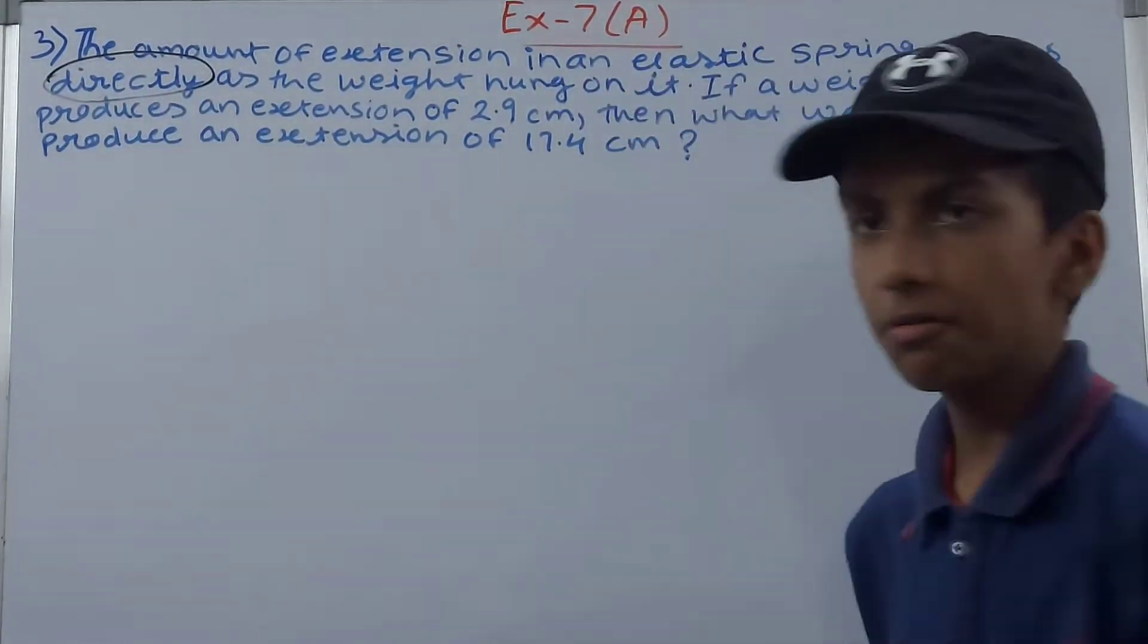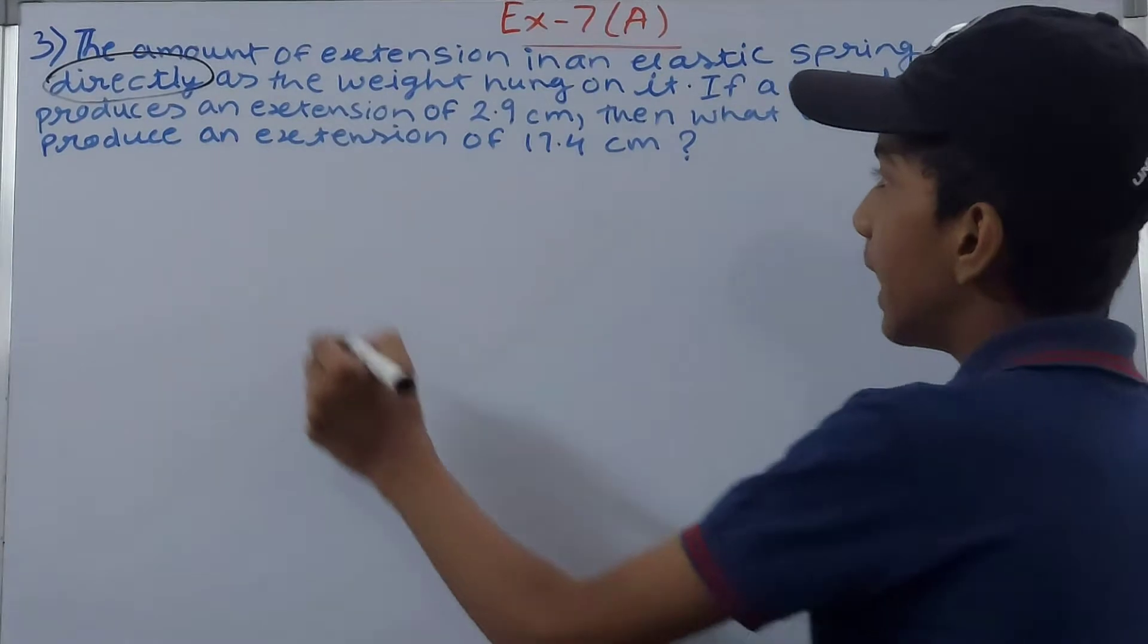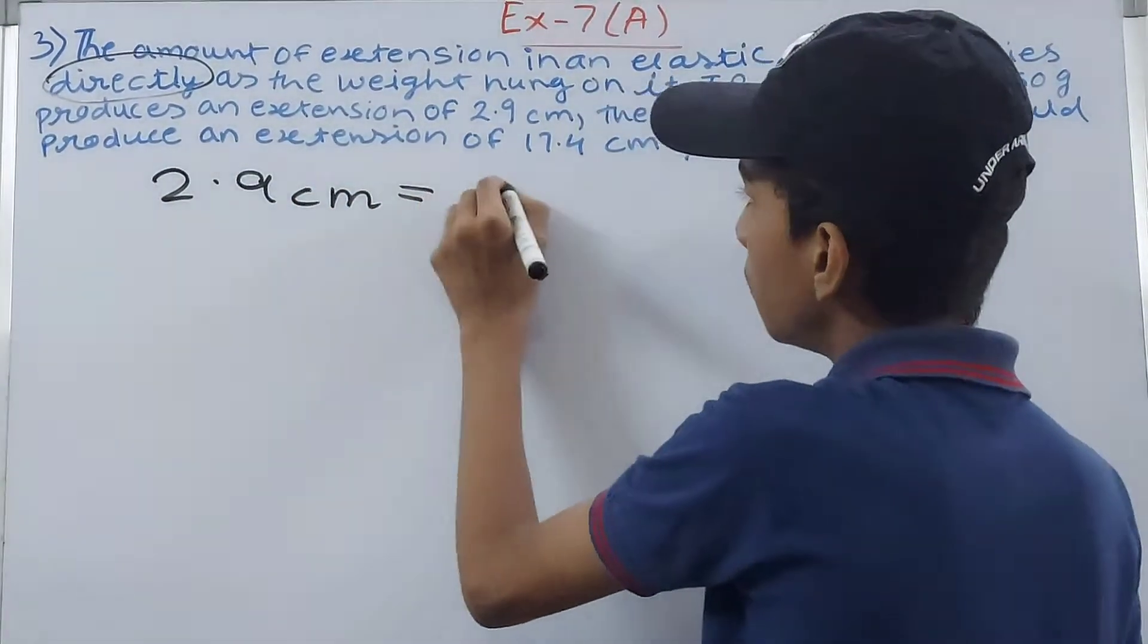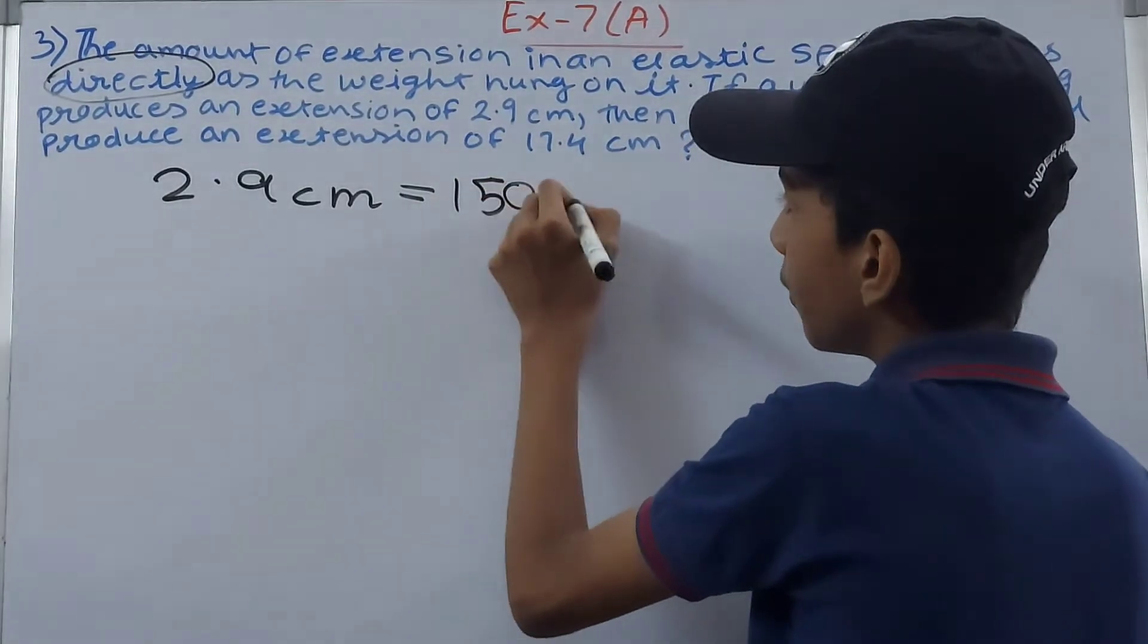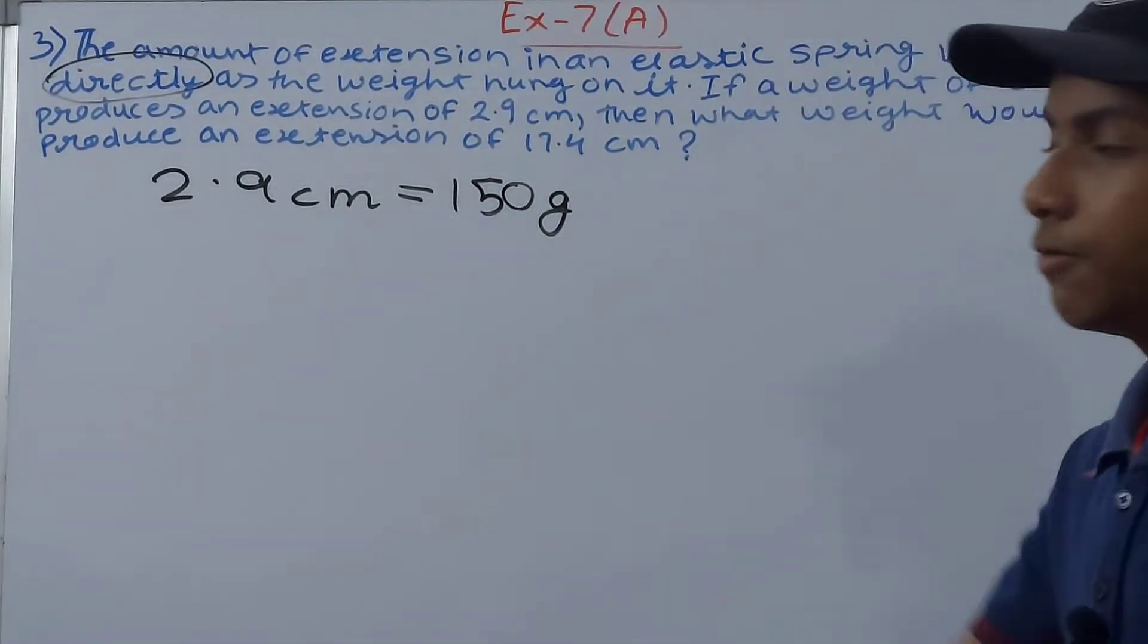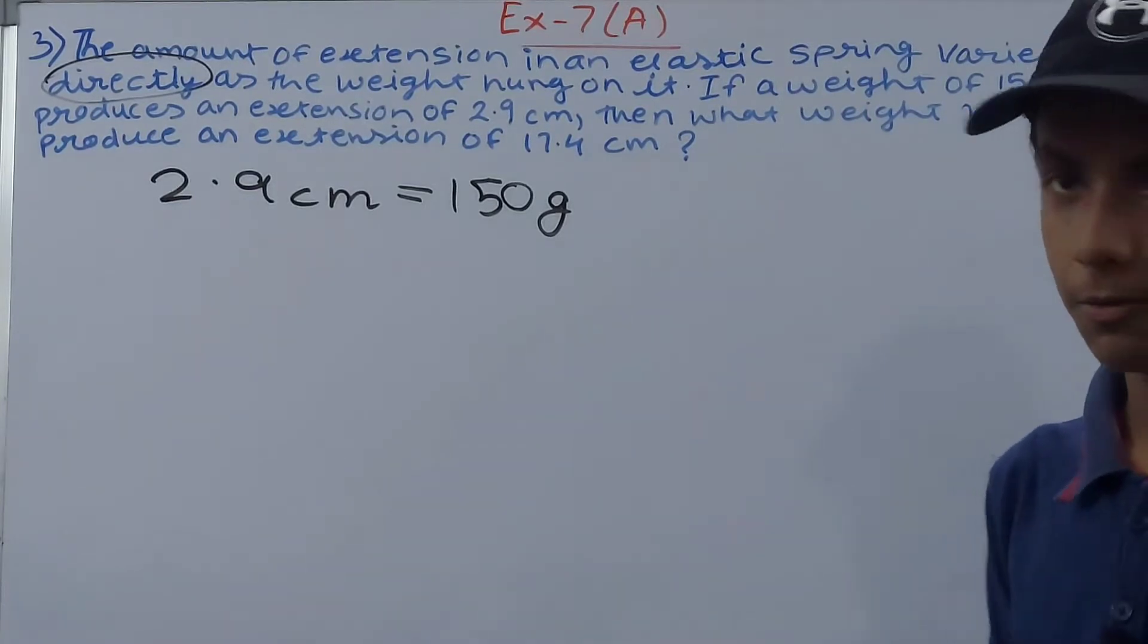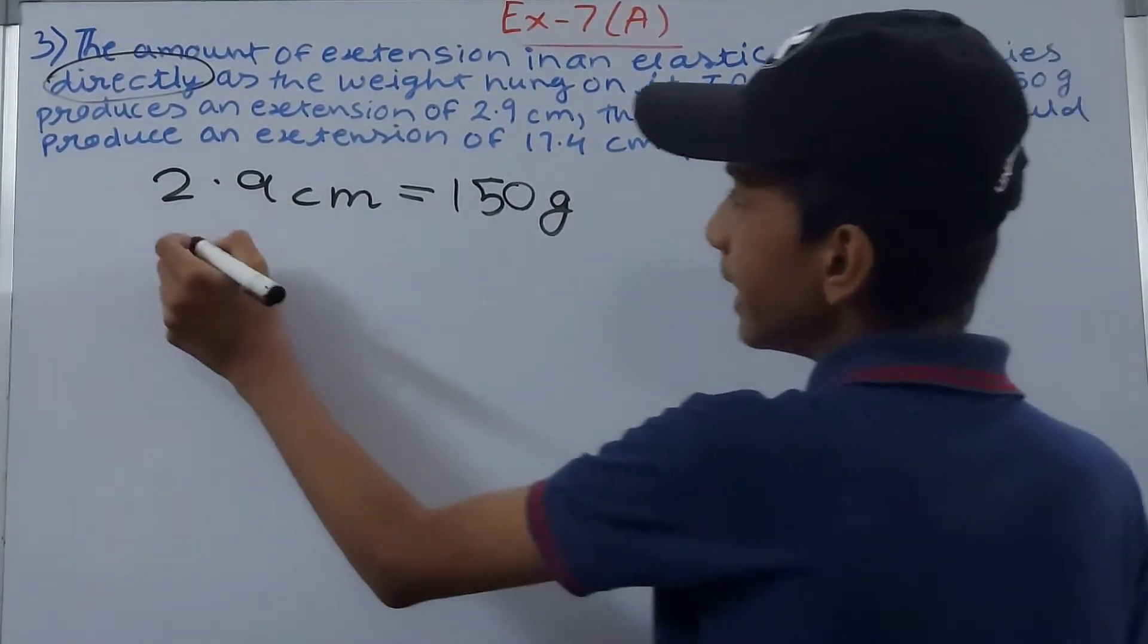So directly means direct variation. We have 2.9 centimeters equals 150 grams. So if we know one centimeter, we can find 17.4 centimeters as well.